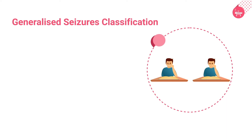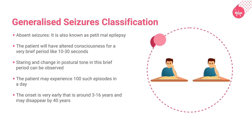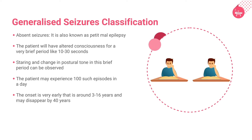First, let us talk about absent seizures, also known as petit mal epilepsy. The patient may present with altered consciousness for a very brief period of 10 to 30 seconds. Common clinical manifestations include staring and change in postural tone. The patient may experience 100 or more such episodes in a day. The onset occurs at an early age, around 3 to 16 years, and may disappear by 40 years.